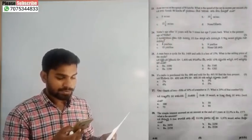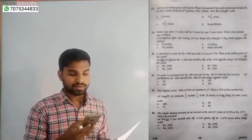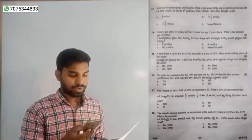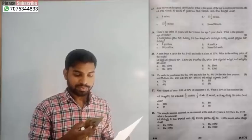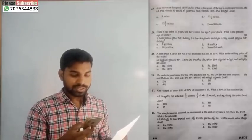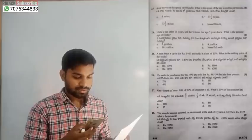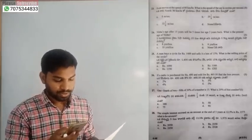Question number 23: the answer is 22 — 2 by 9 metres per second. Question number 24: this is about age — the present age is the average age, so the average age is 10 years. Option C is the correct answer.